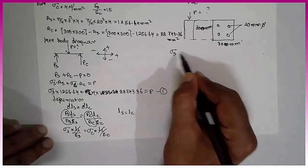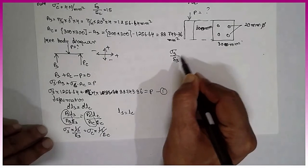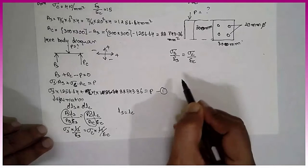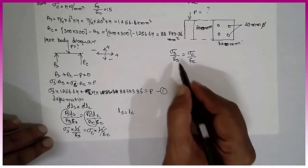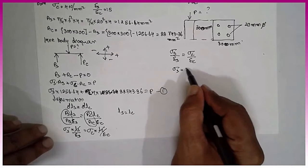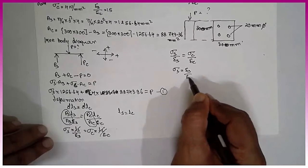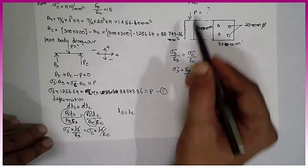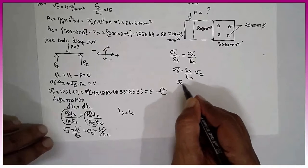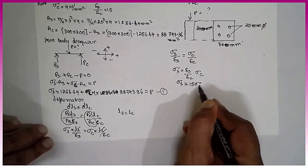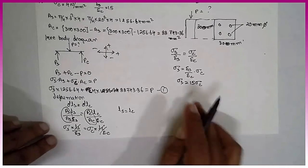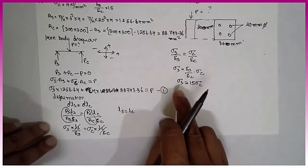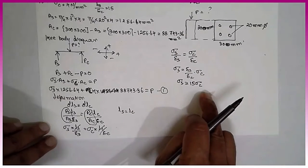Further, Sigma S divided by Es is equal to Sigma C divided by Ec. Now Sigma S, I will bring this side, Es divided by Ec into Sigma C. Now what is Es divided by Ec is nothing but 15. Sigma S is nothing but 15 Sigma C. Es divided by Ec is nothing but 15. Therefore, Sigma S is nothing but 15 Sigma C.